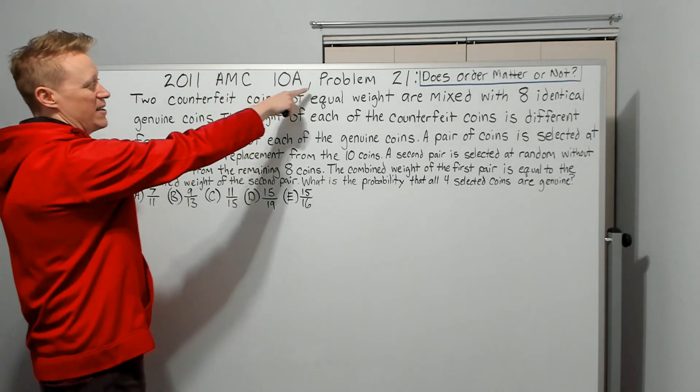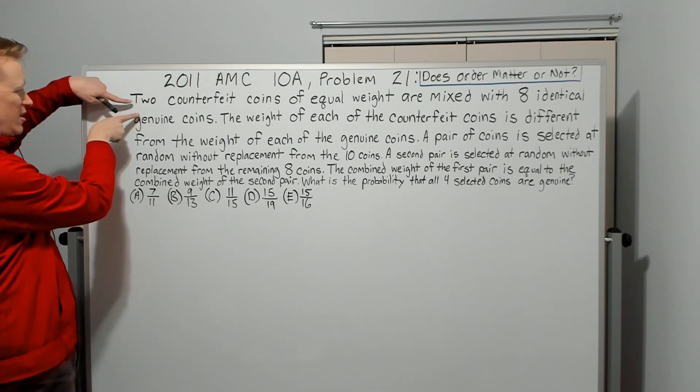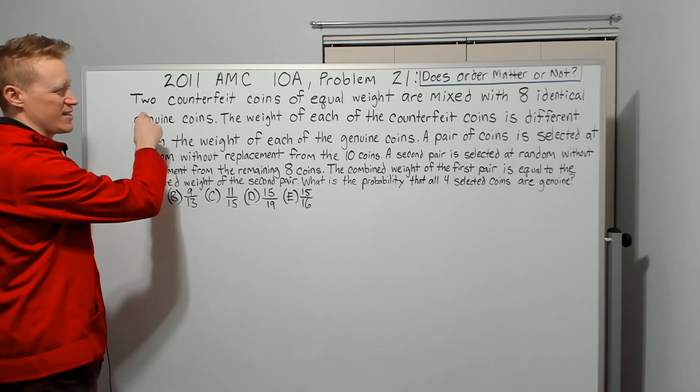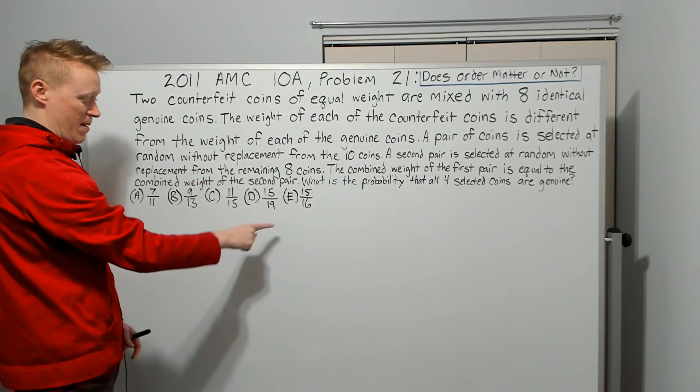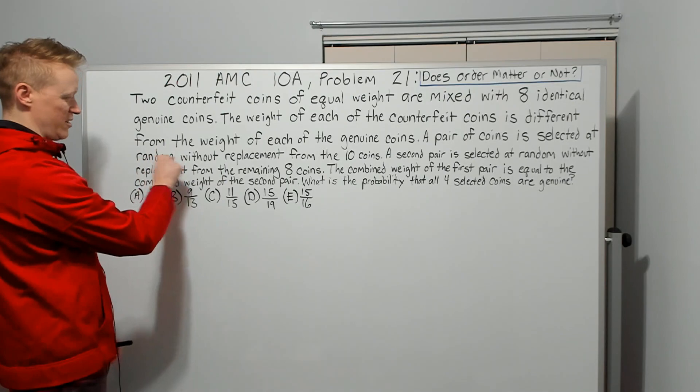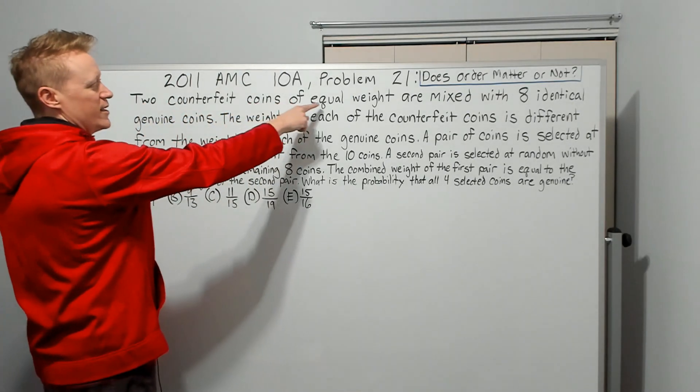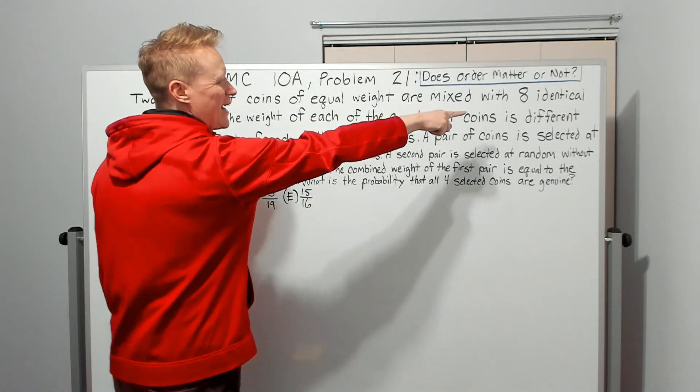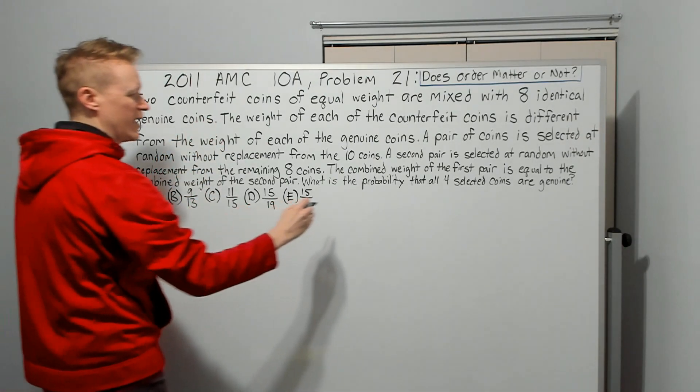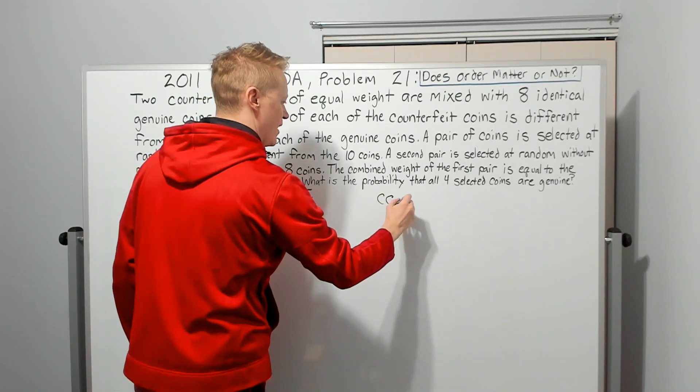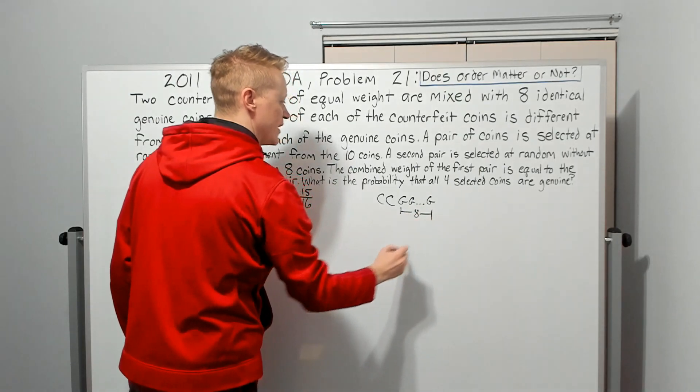So let's get started on it. This is the 2011 AMC 10A. It was problem number 21. By the way, there's large gaps in the writing up here at the top because I thought, all right, big and nice. And then I started to realize this is a long problem. I'm gonna be down here, so I started to kind of shrink it up. So two counterfeit coins of equal weight are mixed with eight identical genuine coins. So we've got two counterfeit and then eight genuine, where this has eight in it, ten total coins.